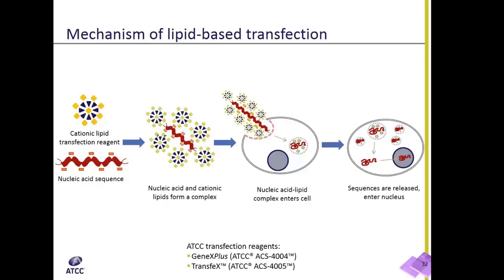Cells in culture have a net negative charge, so the positively charged nucleic acid and lipid complex moves to the negatively charged cell membrane. The complex is then either engulfed by the cell membrane or the lipids of the complex diffuse into the cell membrane. Through either method, the nucleic acid eventually gets across the cell membrane and into the cytoplasm.